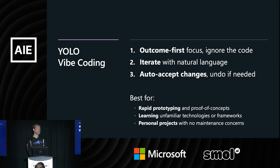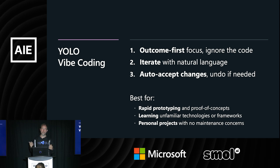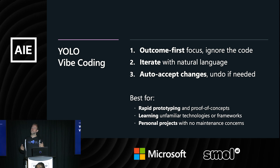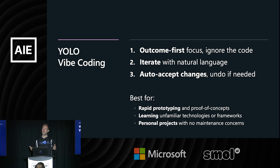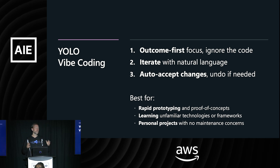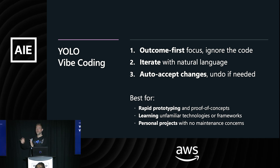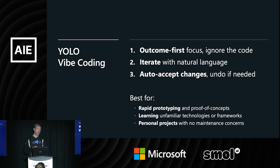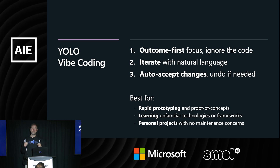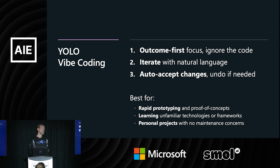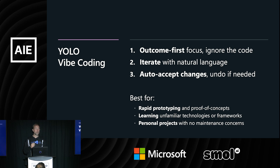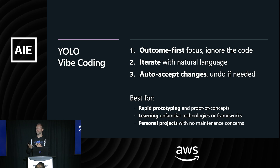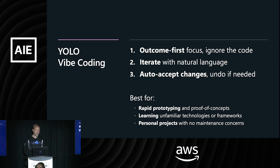Quick Yolo outline: as Karpathy termed it, it's all about the outcomes. You don't look at code; you iterate using language. Best to even talk to the AI. Auto-accepting is really part of it — you talk to the AI, look at what it creates, and all the rest just lands. If it ever goes wrong, you just reset completely: throw out the code, undo, and keep going. There is a place for Yolo vibe coding. It's rapid prototyping and proof of concept. It's where creativity really shines and you can focus on the outcome.